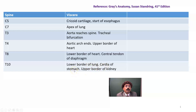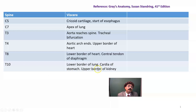At T10 level, we also have the cardia of the stomach. We know that the stomach has two parts: the cardiac part and the pyloric part. At the T10 level, we have the cardiac part of the stomach, and also at the T10 level, the upper border of the kidney. The left kidney is positioned a bit higher than the right kidney.